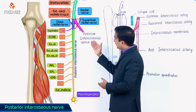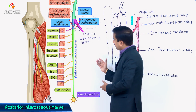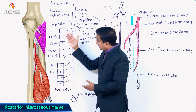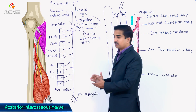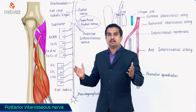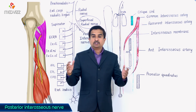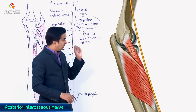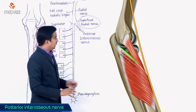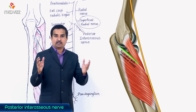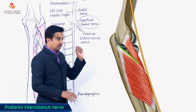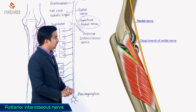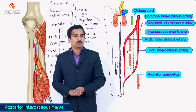The deep branch then passes between the two heads of the supinator and enters the posterior compartment of the forearm — as you can also see in this picture, where the nerve passes between the two heads of the supinator. Officially, the deep branch of the radial nerve converts into the posterior interosseous nerve at the superior border of the supinator muscle. This superior border of the supinator is called the supinator arch, also known as the arcade of Frohse.